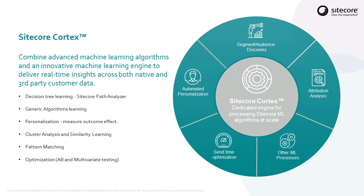Sitecore Cortex is throughout the platform. There's no application on the dashboard you can launch to see Cortex in action. It's going throughout everything that we are doing with algorithms and machine learning, really providing benefits where it's needed most. One of the most important pieces available with Sitecore Cortex is our brand new Cortex processing engine. This is where some real data science power is going to show itself, with our ability to run algorithms and models on data at scale.